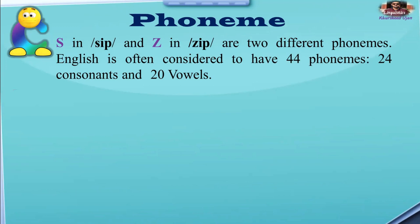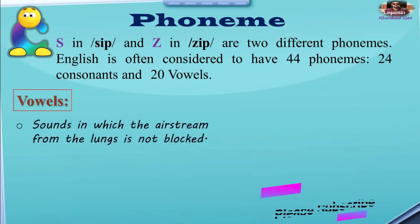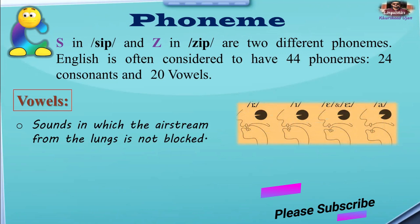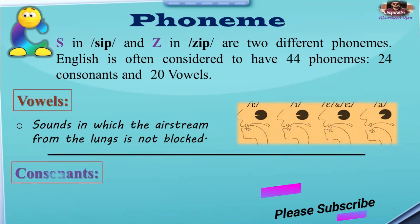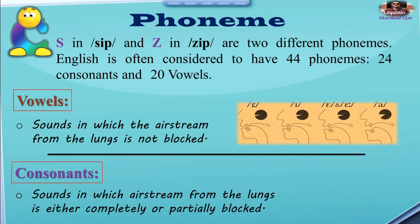Vowel sounds are sounds in which the airstream from the lungs is not blocked. If you look at the pictures, when we are pronouncing vowels like /iː/, /ɑː/, and other vowel sounds, the airstream is not blocked at the mouth. On the other hand, consonant sounds are sounds in which the airstream from the lungs is either completely or partially blocked. As shown in the picture, the mouth is closed when pronouncing phonemes like /b/, /p/, /m/ — such phonemes are known as consonants in English.